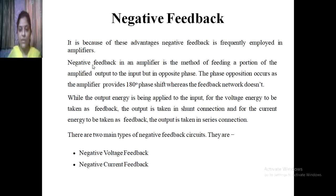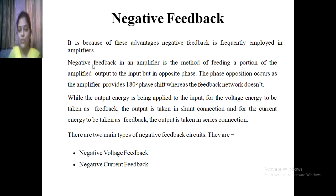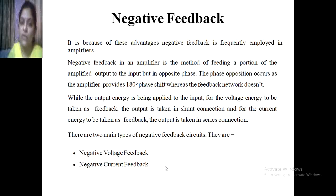Negative feedback in an amplifier is the method of feeding a portion of the amplifier output to the input but in opposite phase. The phase opposition occurs as the amplifier provides 180-degree phase shift whereas the feedback network does not. For voltage energy to be taken as feedback, the output is taken in a shunt connection, and for current energy to be taken as feedback, the output is taken in a series connection. There are two main types: negative voltage feedback and negative current feedback.